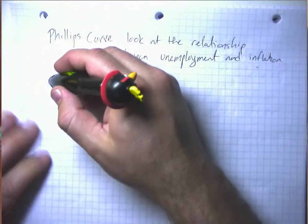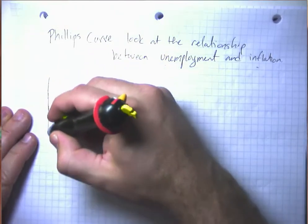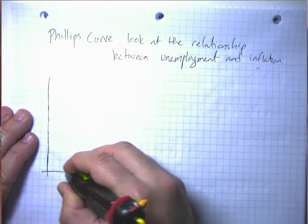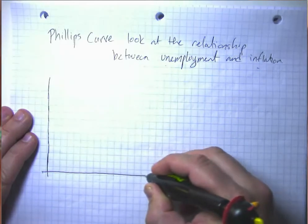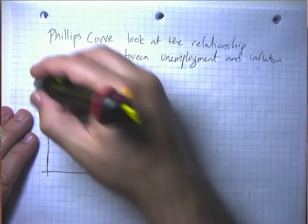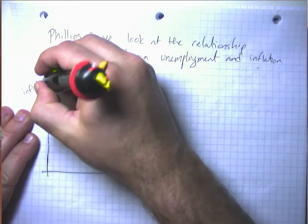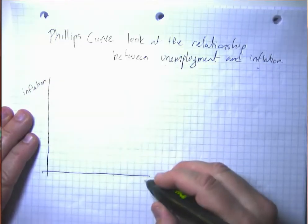And the Phillips Curve is typically going to be a graph that looks something like this. And this was all discovered just as a fact before people had a real good theoretical explanation for it. So it was discovered as an empirical fact before people had a good explanation.